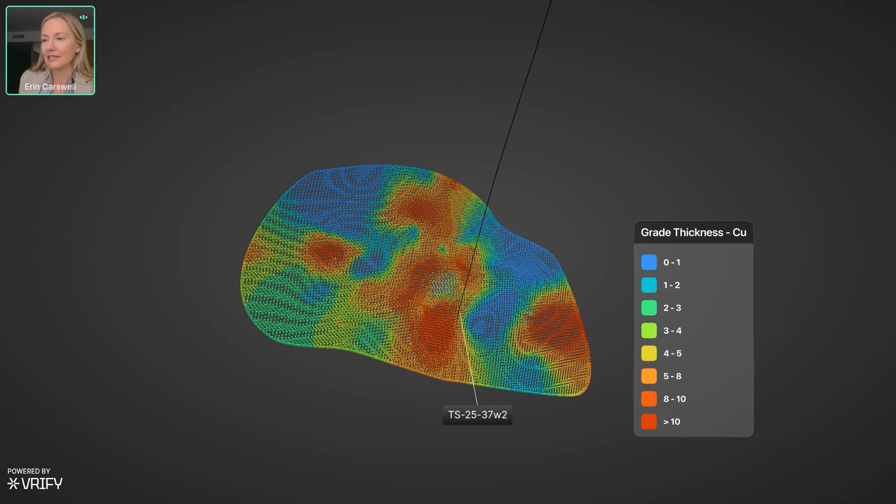You do have this distinct trend in higher grade thickness for copper. So it does seem to form this shoot across the main lens there. It's interesting because when we think about where we go next, where there's any further expansion required at Tesla, this is obviously the direction that we want to be going in for copper.